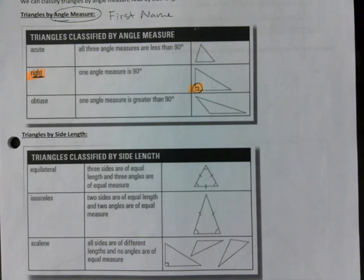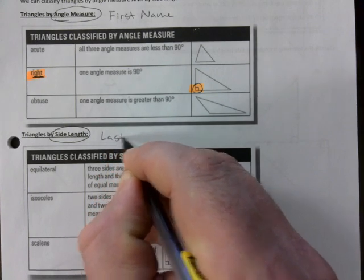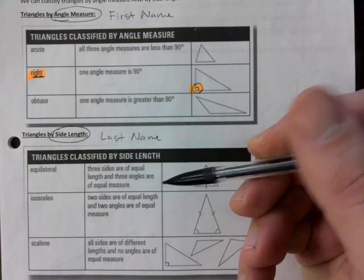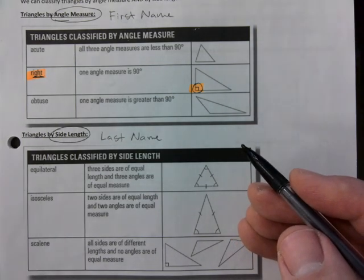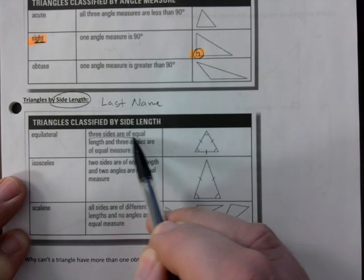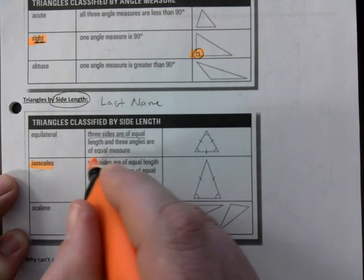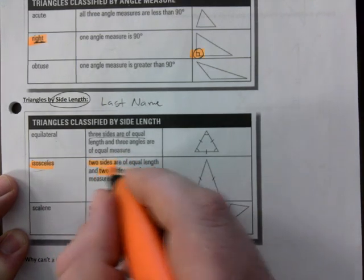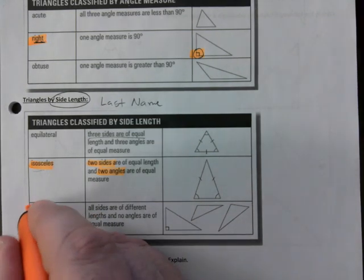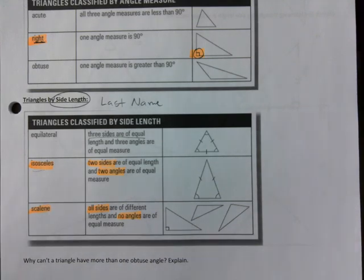The second name — the last name — is based on side length. Three options: equilateral means all three sides are the same; isosceles means two sides are equal or two angles are equal; scalene means all sides are different and no angles are the same.